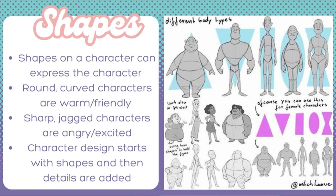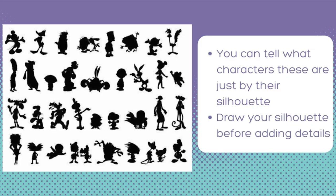Shapes on a character can be expressive of the character. For a soft, friendly character, you can use more round, curved lines and shapes to give them a warm, friendly feeling. For sharp, jagged characters, they're more rough around the edges. All character designs start with shapes before finalizing the characters with detail. Another method for character design is using silhouettes. By looking at silhouettes, you can tell these characters belong together in the same show — they all have similar repeating shapes in their design. Making silhouettes gives you a good base before adding details.